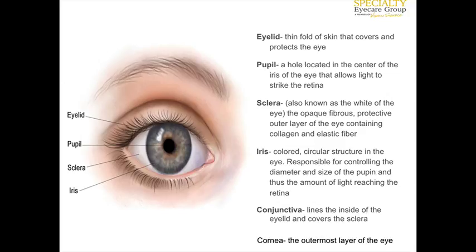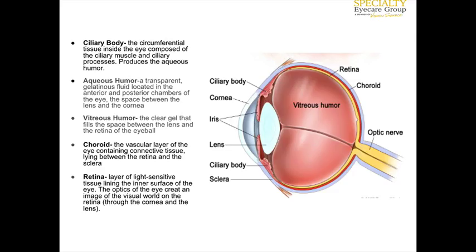The conjunctiva is a thin layer of mucus-type tissue that overlies the sclera. The cornea is the outermost layer of the front of the eye that covers the iris. The ciliary body is the circumferential tissue inside the eye, and it produces the aqueous humor, which is the fluid inside the eye.